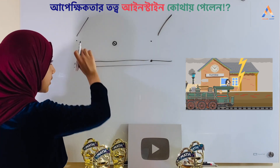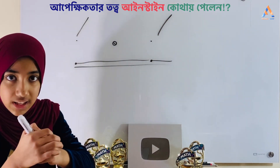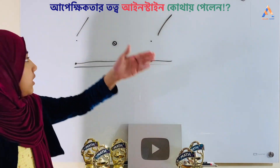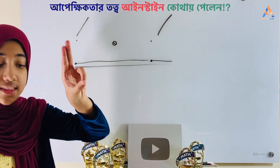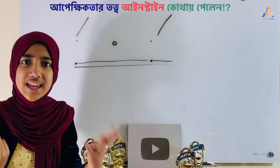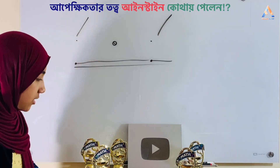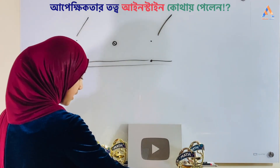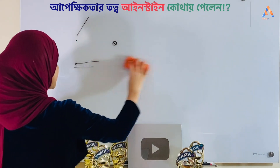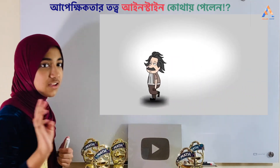The person in the train would think that these lightning bolts fell at different times, while Einstein saw that they actually fell at the same time. So Einstein said that from different frames of reference, the simultaneity of events appears different.